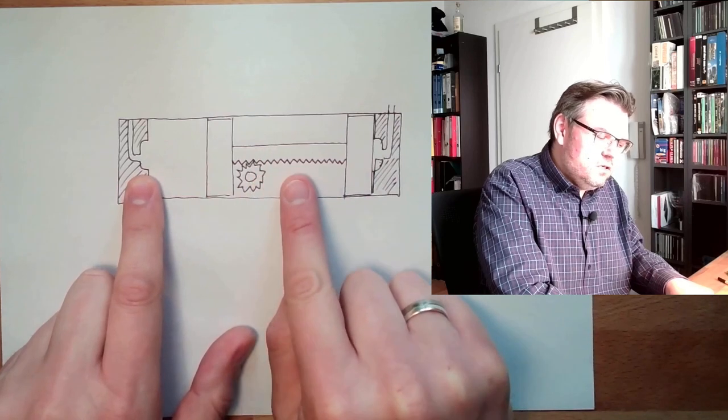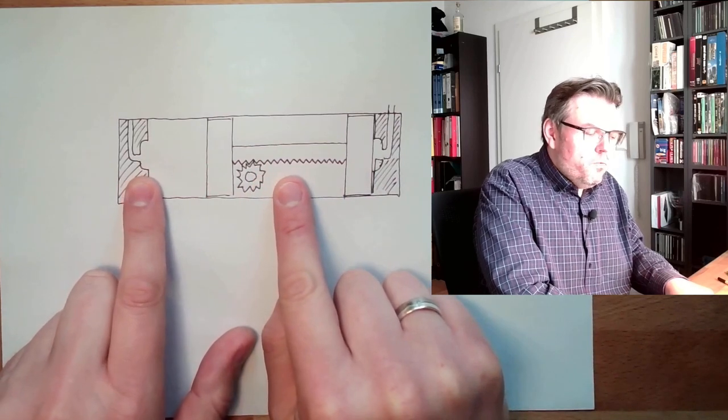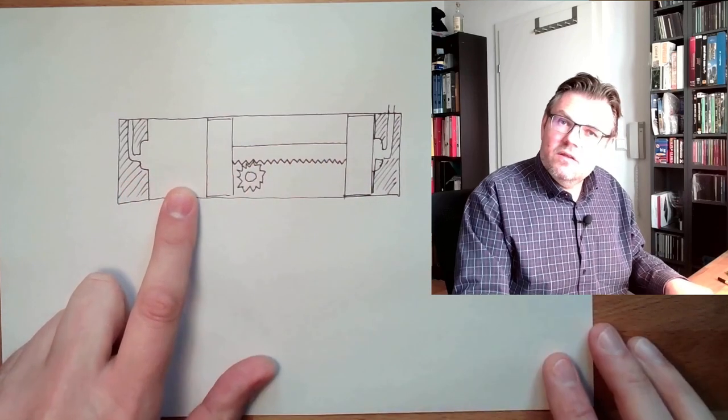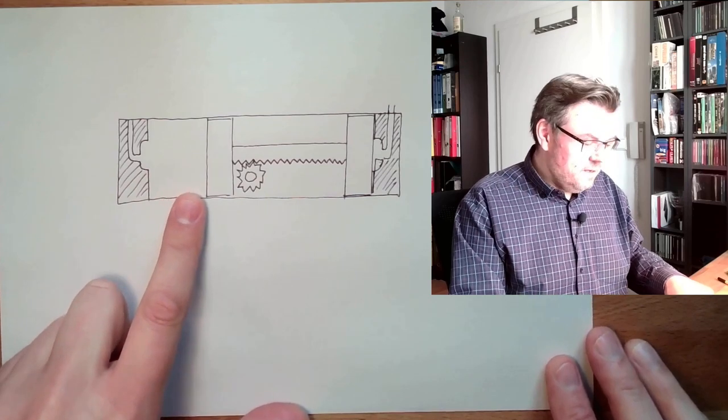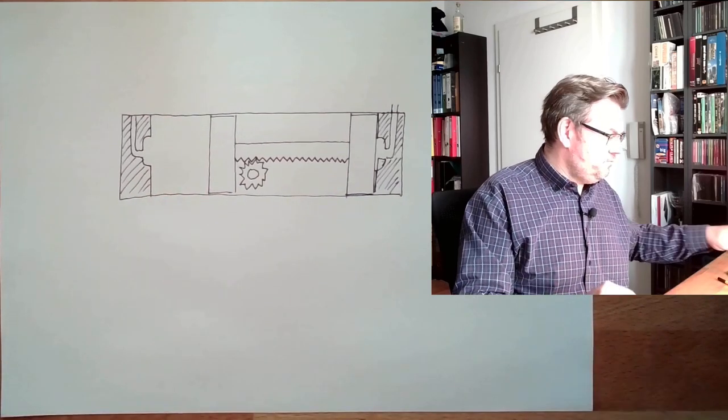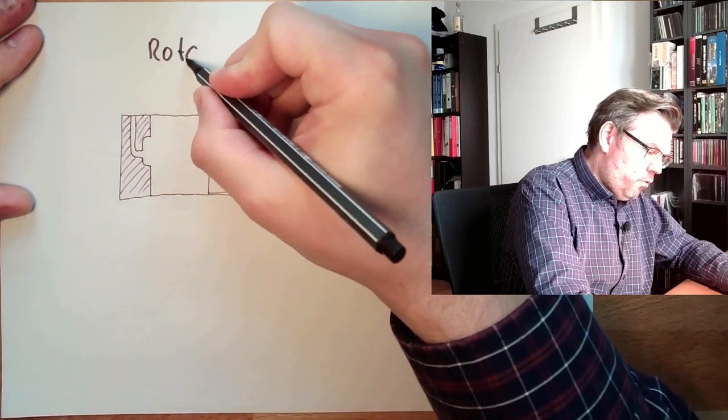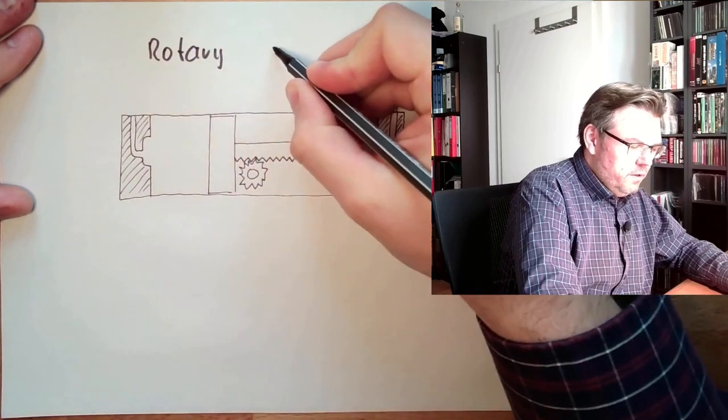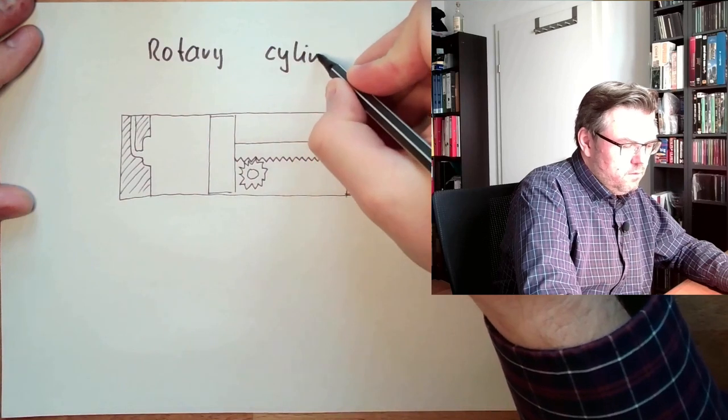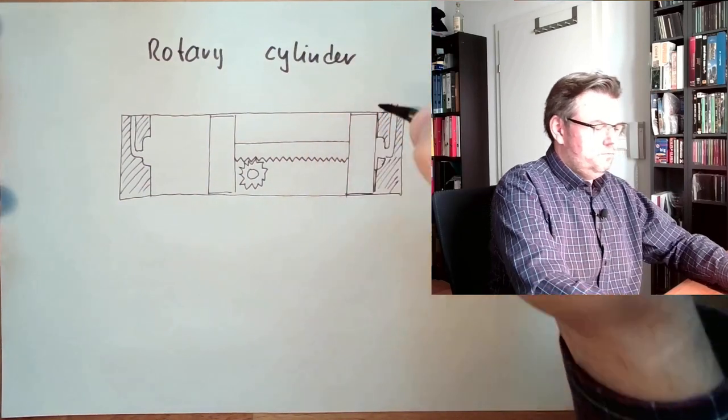If we're down at the end position here, we can travel back, and this will move in the other direction. Rotary cylinder, this is called. Rotary cylinder, okay?